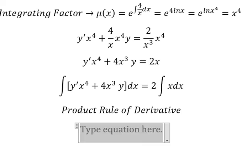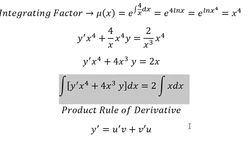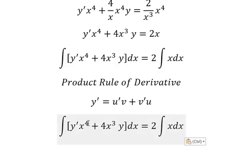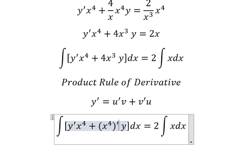So the first derivative of y, that is the first derivative of u multiplied by v plus the first derivative of v multiplied by u. So this is u'v, this one is v'u.